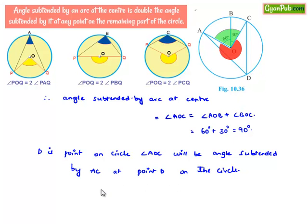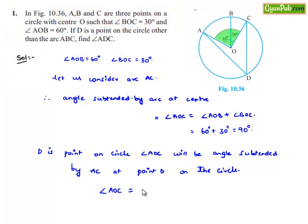Therefore here angle subtended by the arc at the center, that is nothing but angle AOC, will be equal to two times the angle subtended by the arc at any point on the circle, that is angle ADC.